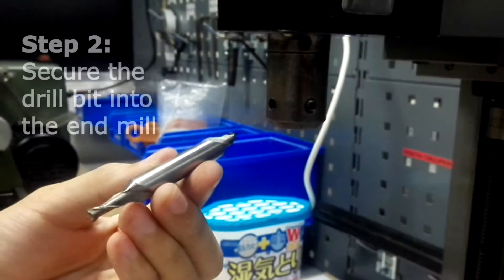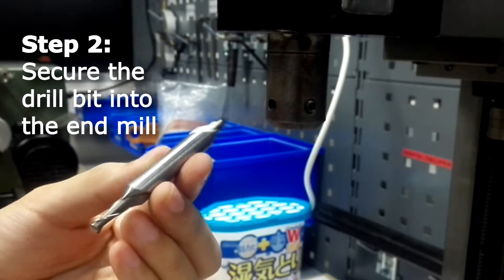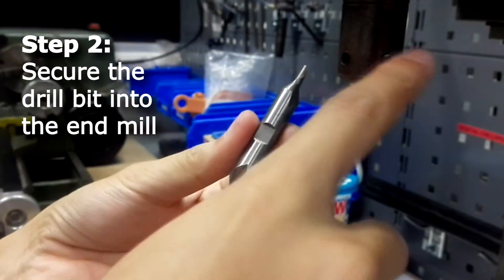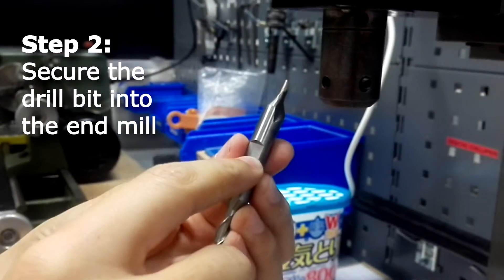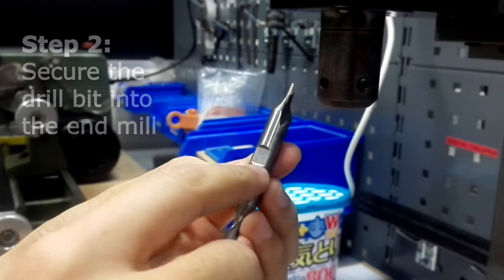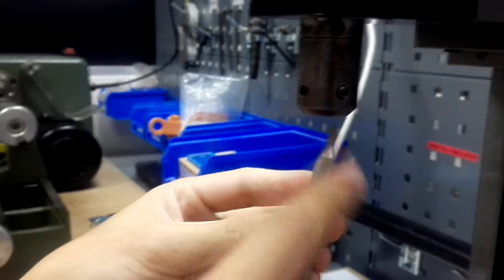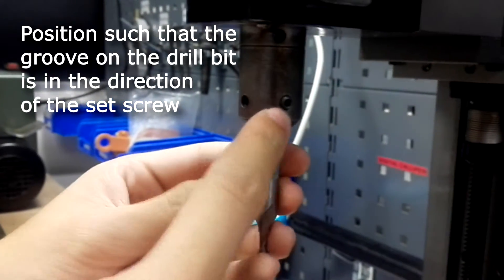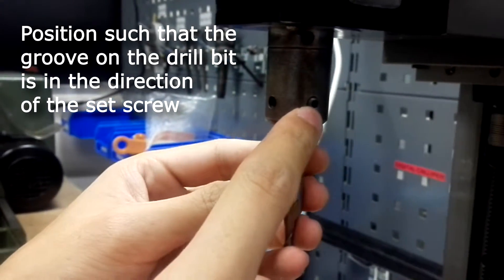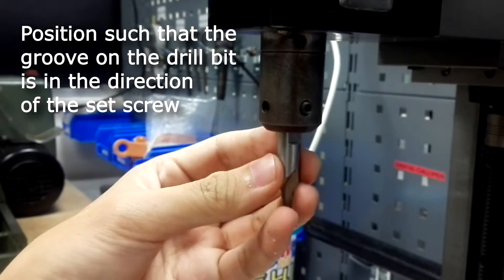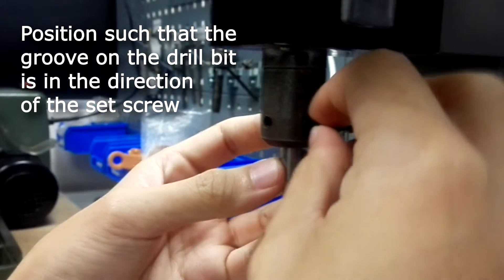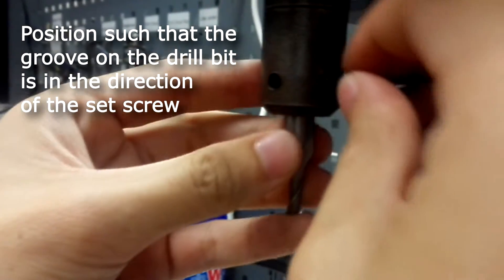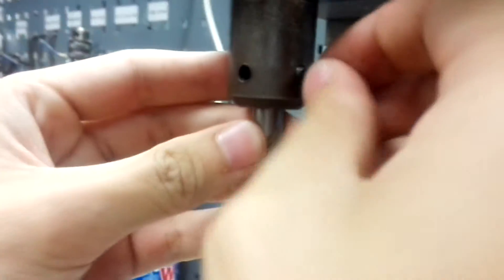Start with the 3/16 drill bit. Notice that there is a little catch over here. This is where the screw will adhere to when it locks it in place. Now that the chuck is loosened, position this catch in the direction of the screw. And when you tighten it just a little, you'll notice that there is limited free play.